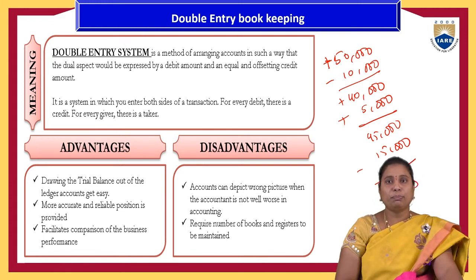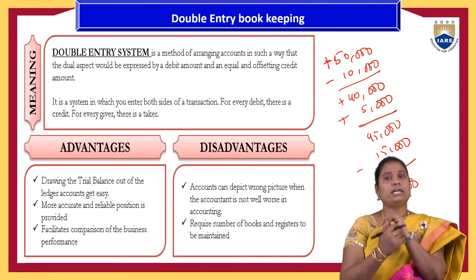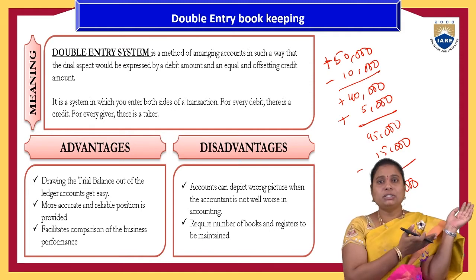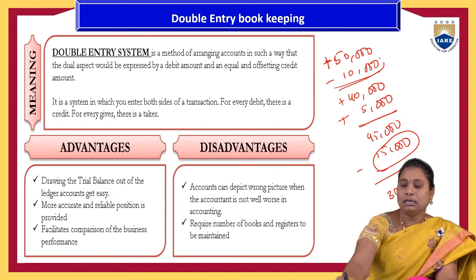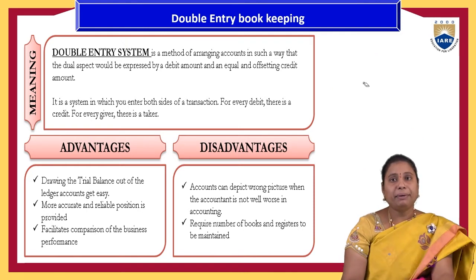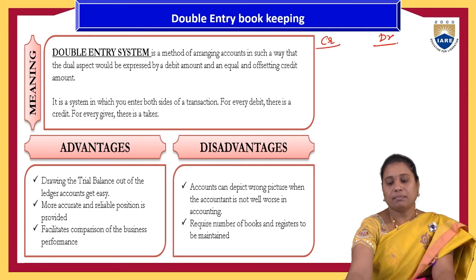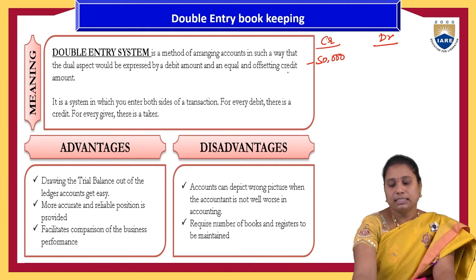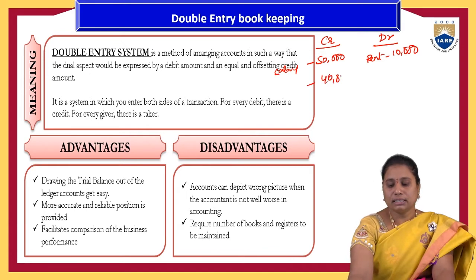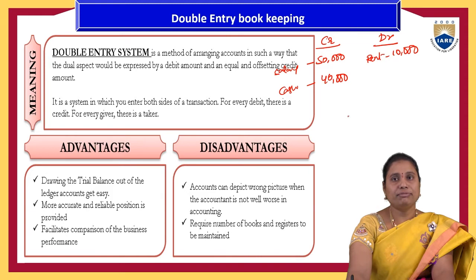This is called the single entry mechanism, which is appropriate for households but not for organizations. Organizations handle numerous transactions per day and many records per month. Instead of searching through entries to find expenditures separately, if they write in a separate manner with credit and debit sides — for example, Rs. 50,000 as salary on credit, Rs. 10,000 as rent on debit, and Rs. 40,000 as remaining cash — this two-element consideration is called the double entry mechanism.